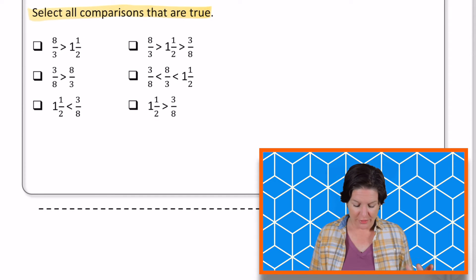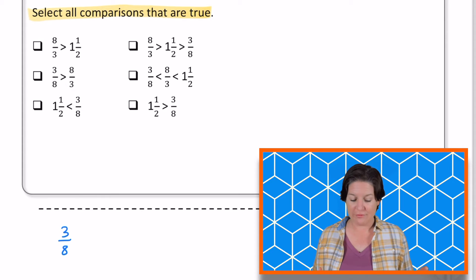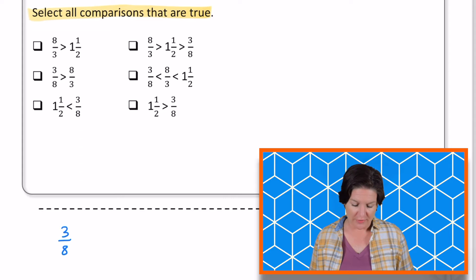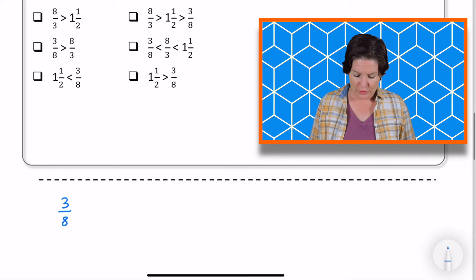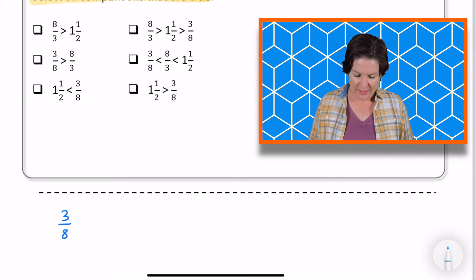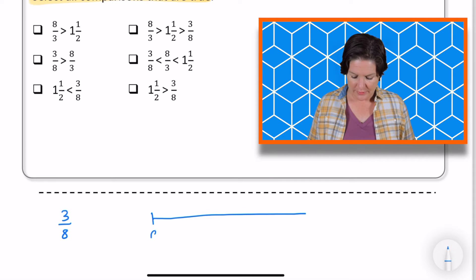So the very first thing that I'm noticing is that three eighths is a fraction that is less than one, while the other two, one and a half and eight thirds, are fractions that are greater than one whole. So I know that three eighths is going to be my smallest fraction. Now it comes down to one and a half and eight thirds. So I'm going to go ahead and compare those. I know that one and a half, if I'm thinking about it on a number line, this would be zero. This could be one. And if right here is two, then one and a half is about right here.